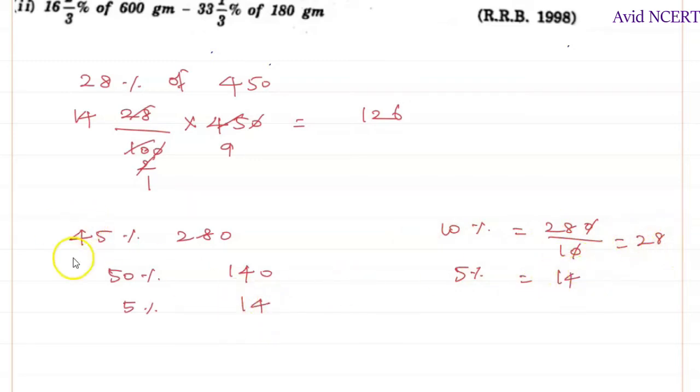Now they are finding 45%. Since we are finding 45%, subtract 50 minus 5. 50 minus 5 is 45. Therefore we are going to separate these two: 140 minus 14, which is 126.